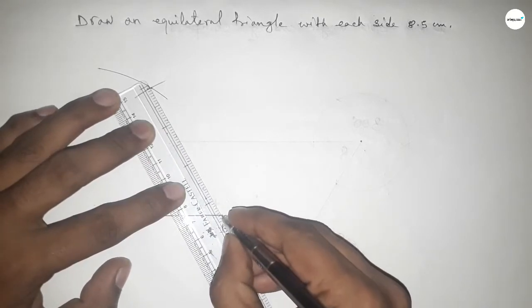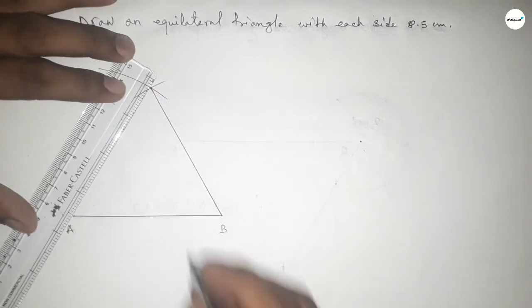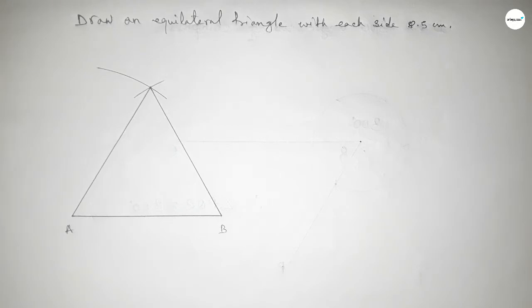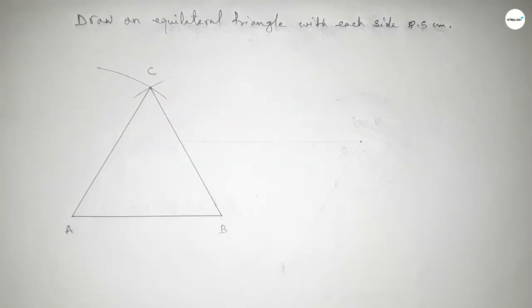And now joining this side and joining this side to get an equilateral triangle with each side 8.5 centimeters. So this is point C.